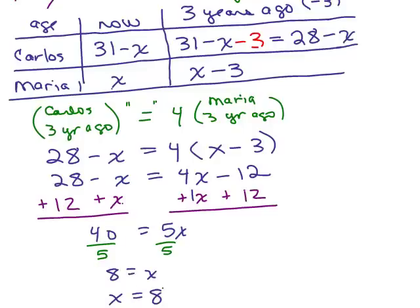Now, what did X stand for? Right up here, go back up to the chart, that's Maria's age right now. So if X is 8, we know that Maria is 8. And what about Carlos? Remember their ages added up to 31? So you know 8 plus his age is going to be 31 or you could do from the chart, 31 minus 8 to figure that out. Carlos is 23.